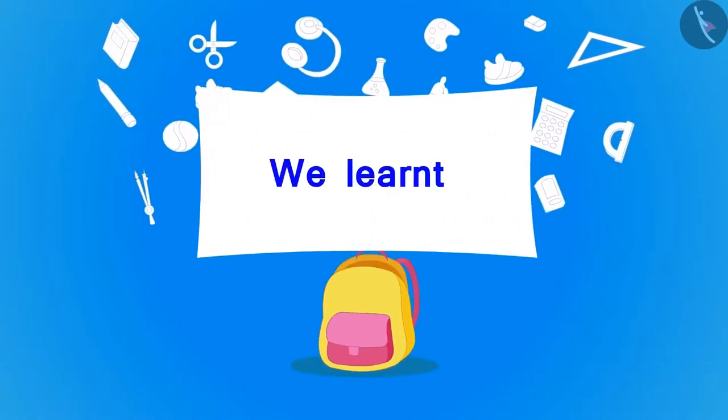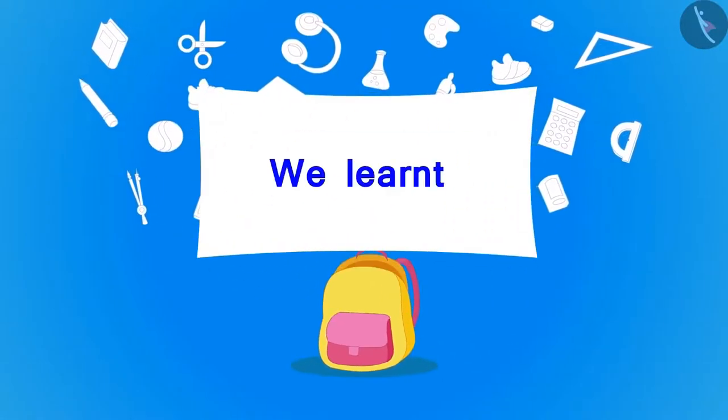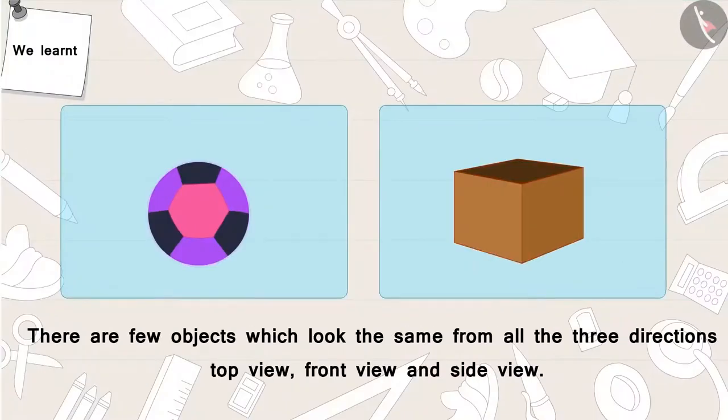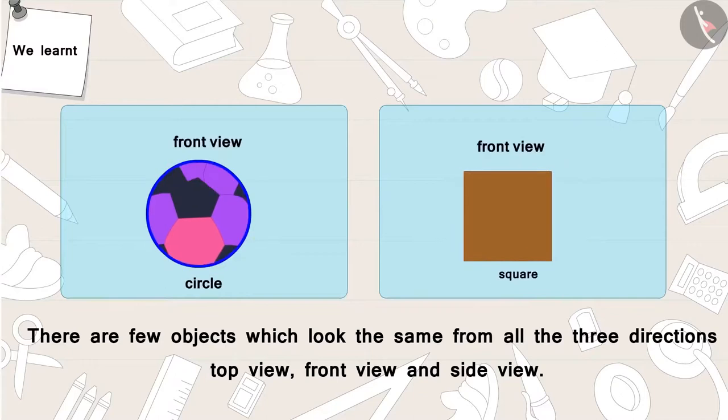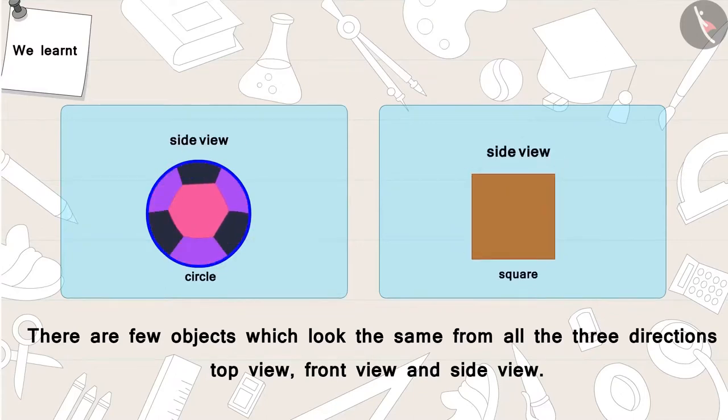So children, in this video we learned that there are a few objects which look the same from all three directions: top view, front view and side view.